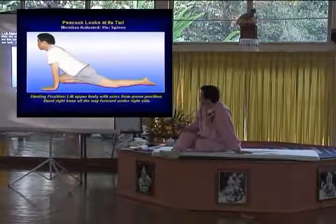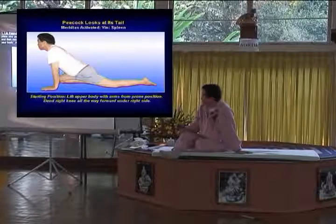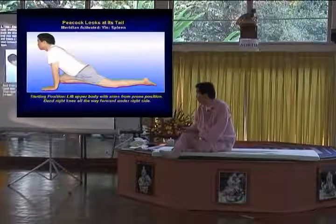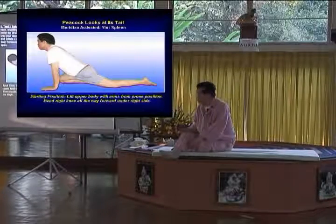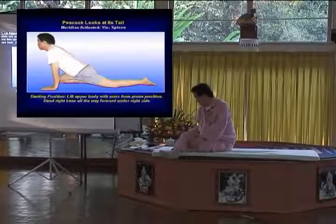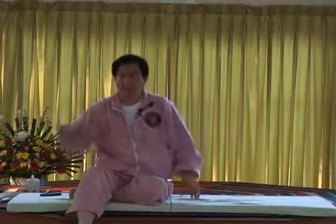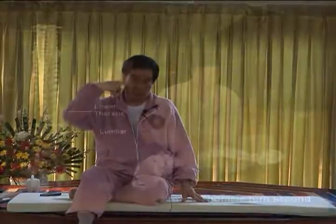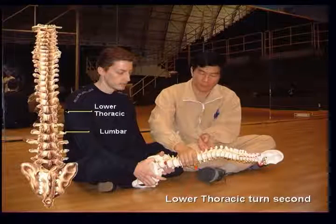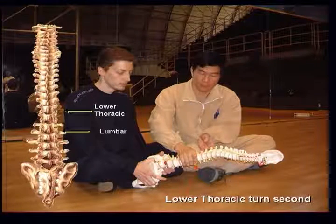The Peacock — look at the tail. So this one, we're going to divide the spine into: number one, we call the lower lumbar twist, the lower thoracic twist, and the middle and upper thoracic twist. So we're going to divide into different twists, and that's the spine.